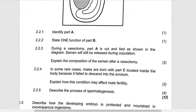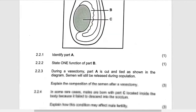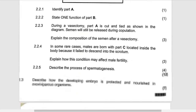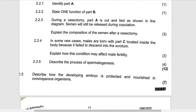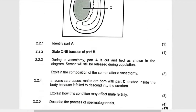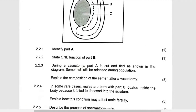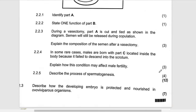What are the accessory glands? The accessory glands are the prostate gland, the cowper's gland, and the seminal vesicle. So those are the three accessory glands which are supposed to be there.